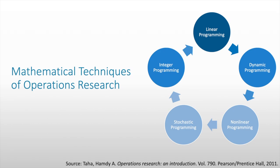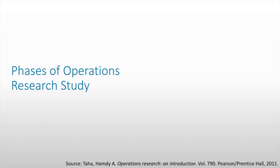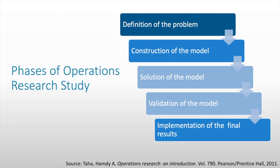So what are the different phases in order to do an operations research study? First, we have to define the problem — this is very crucial and critical. We have to understand the problem at its core in order to know what we want to solve and what kind of problems we will encounter. Then we have the construction of the model, where we use mathematical models to replicate our real system — this is where we construct our linear program or integer program. Then we have the solution of the model, which is basically solving the model constructed in the previous stage. Then we have validation of the model, to validate if our solution is correct, done through implementing our solution on a prototype system. Finally, we have the implementation of the final results, where we implement our solutions to the real system.